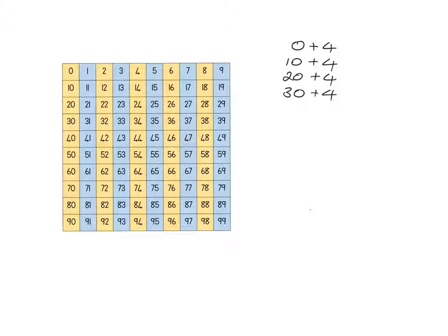So to explain what I'm meaning here, if we start with the idea of, let's say, 0 plus 4, a nice simple little one, 0, 4 steps gets us to 4. But we can see the pattern is going to be exactly the same for 10 plus 4 steps. It's going to get us to 14. And 20 plus 4 steps is going to get us to 24. And 30 plus 4 steps is going to get us to 34.